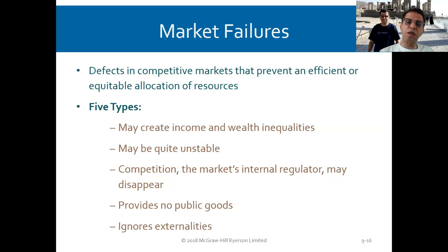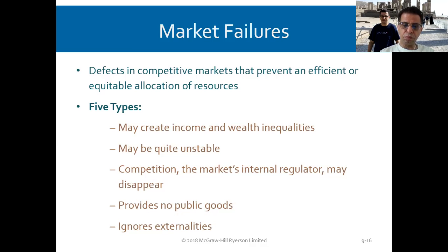There is also market failure — a defect in a competitive market that prevents efficient or equitable allocation of resources. There are five types causing this: it may create income and wealth inequalities so the rich get richer and the poor get poorer; it may be unstable; competition in the market may disappear through internal regulatory failure; it may provide no public goods; and it may ignore externalities.